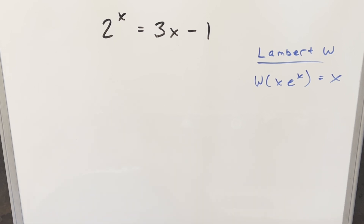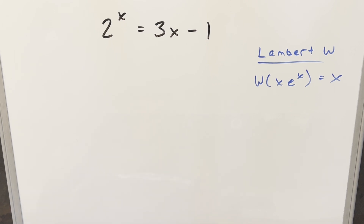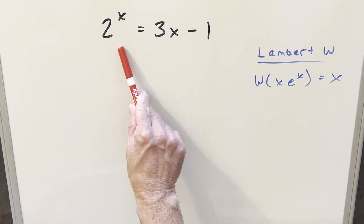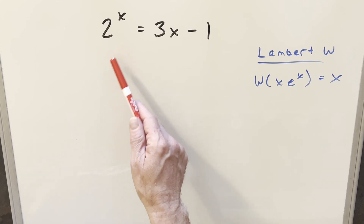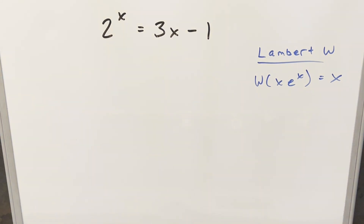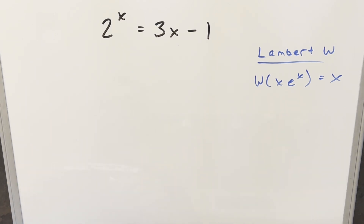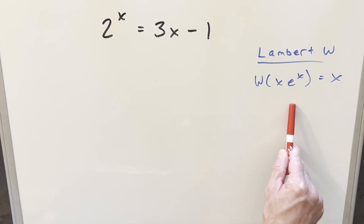A couple notes before I start: I want to solve this using the Lambert W function — I find that to be an interesting way, but it's probably not the best way. If you want a fast way, guess and check is probably the fastest, because you can just start plugging in some common values for x and quickly get to the solution. There's more than one solution, but they're both pretty easy to find. There might also be a way to solve this with just natural logs without using the Lambert W function.